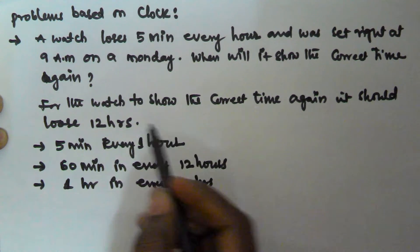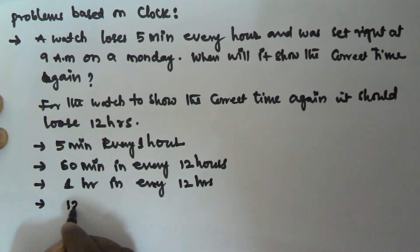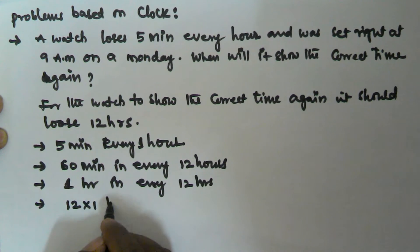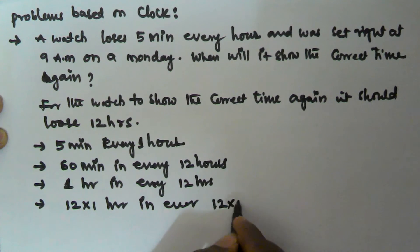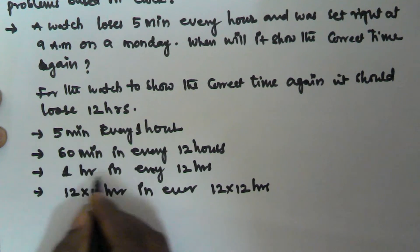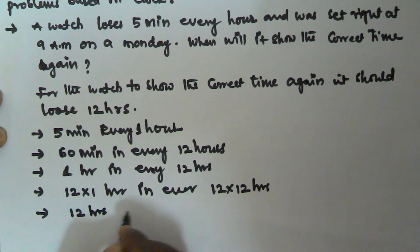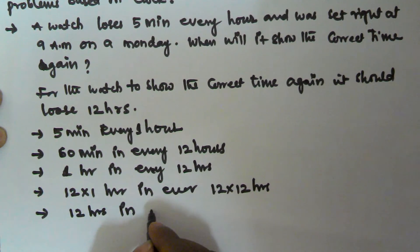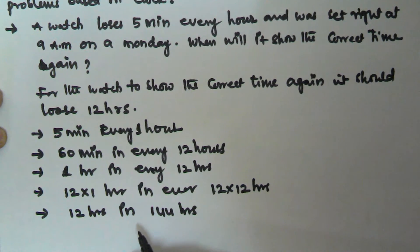But actually we need 12 hours of loss, so I multiply this by 12 again. So 12 times 1 hour losing every 12 times 12 hours. That means it will lose 12 hours in 12 times 12, which is 144 hours. The watch will lose 12 hours in 144 hours.